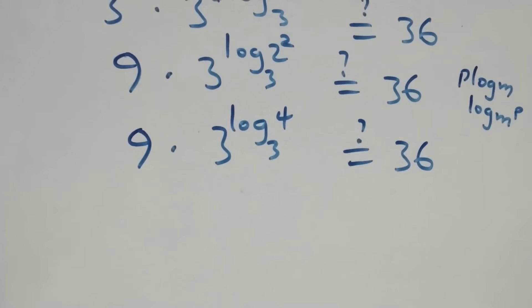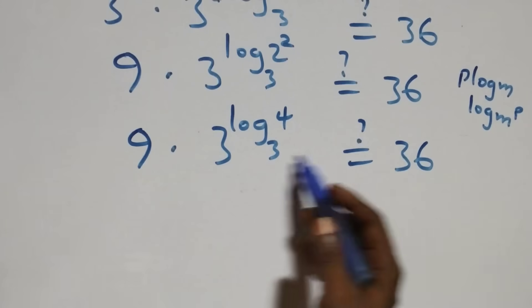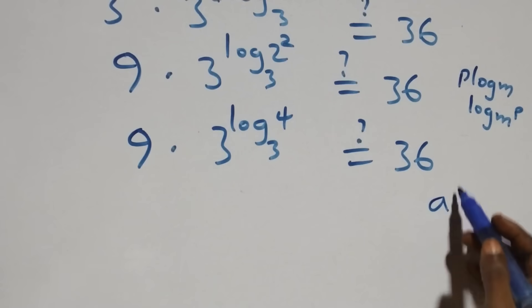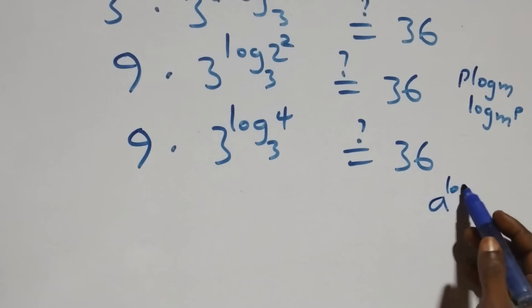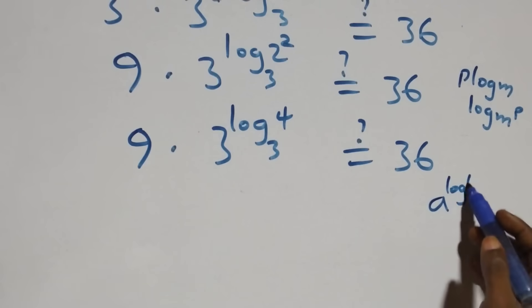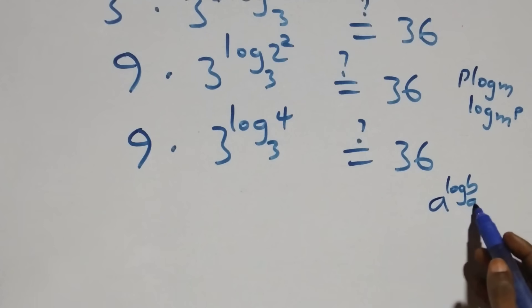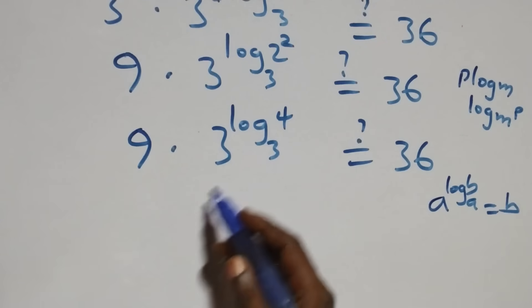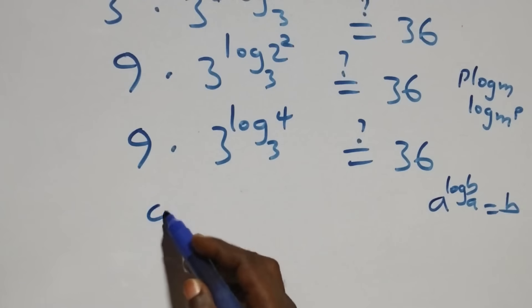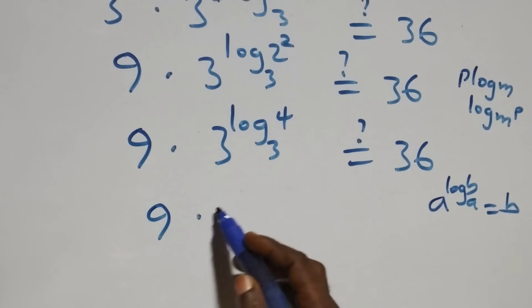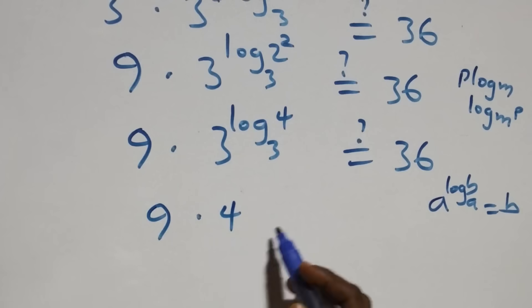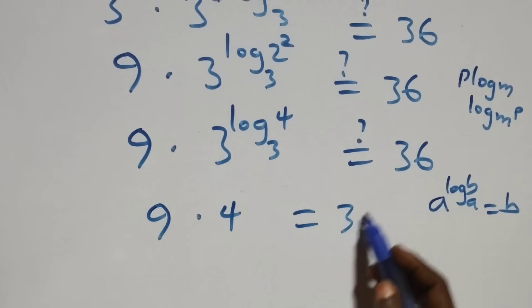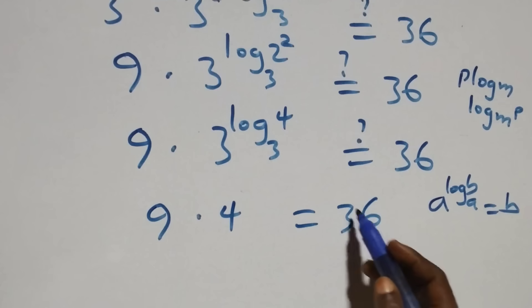This follows the law of logarithms: when we have a raised to the power log b to base a, this equals b. That is, 3 raised to the power log 4 base 3 equals 4, which implies 9 times 4. Is it equal to 36 on this side?